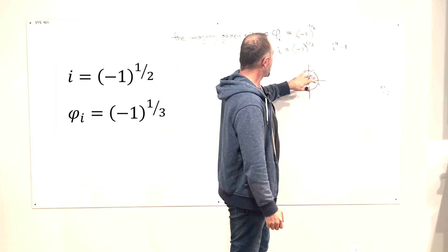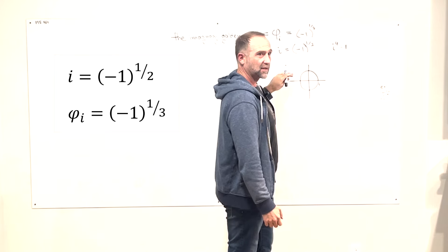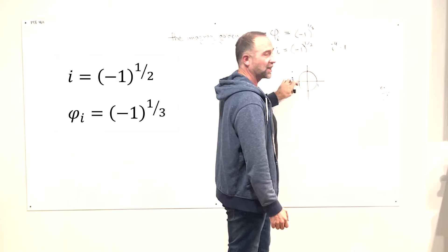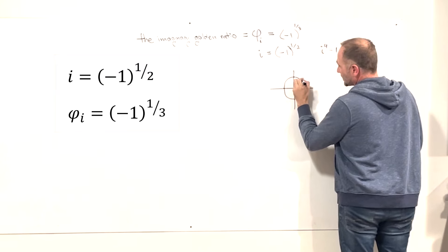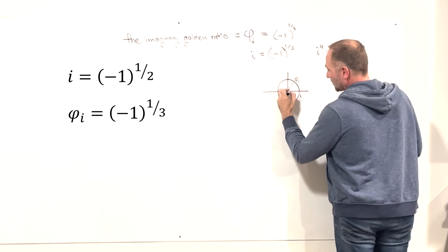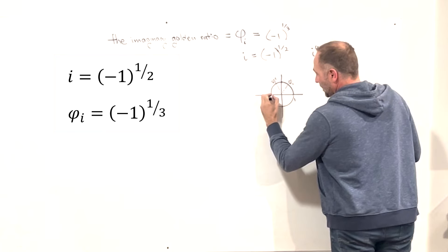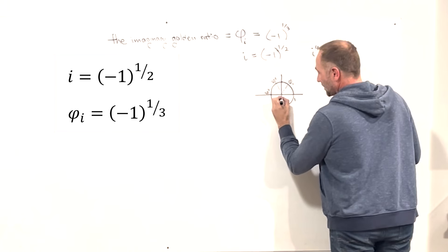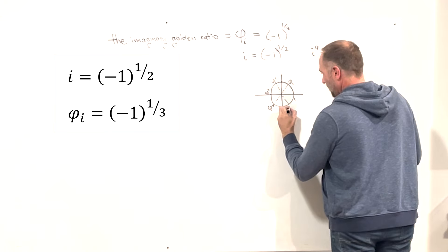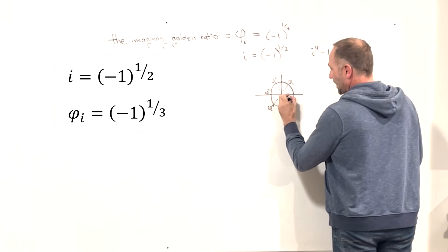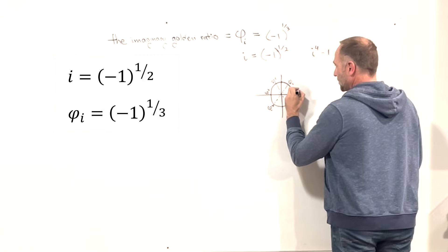In the same way, we use the imaginary golden ratio to divide the circle into six pieces. It takes three to get halfway around, or flip. The first position is the imaginary golden ratio, the next is imaginary golden ratio squared, then cubed, to the fourth, to the fifth, and back to imaginary golden ratio to the sixth — or to zero, which is one.